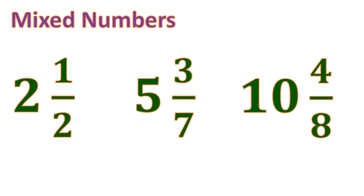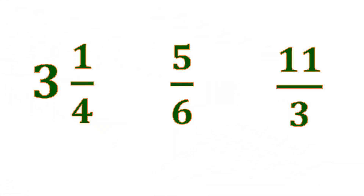We also have ten and four-eighths — these are what you call mixed numbers. We usually get a mixed number from an improper fraction by transforming the improper fraction into a mixed number. For practice: three and one-fourth contains a whole number three combined with one-fourth, a proper fraction — this is a mixed number.